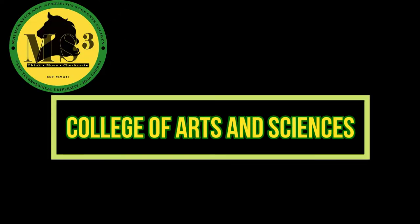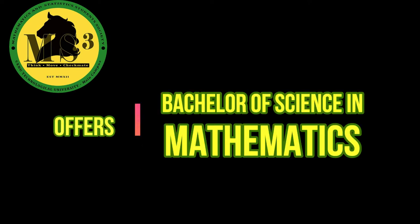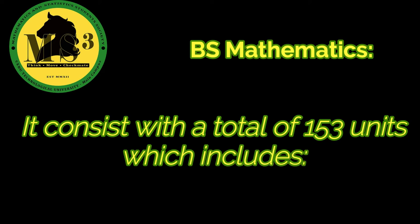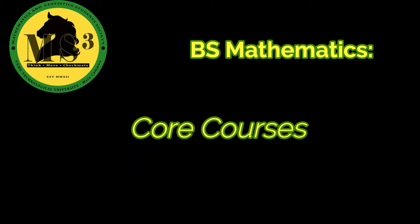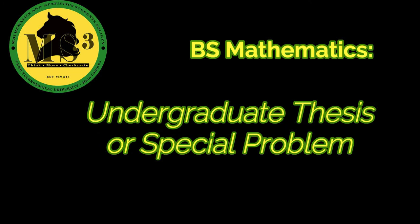College of Arts and Sciences through the Department of Mathematics and Statistics offers Bachelor of Science in Mathematics. It is a four-year degree program that deals with a comprehensive study of mathematics. It consists of a total of 153 units which includes four courses, math electives, free electives, undergraduate thesis or special problem and general education.